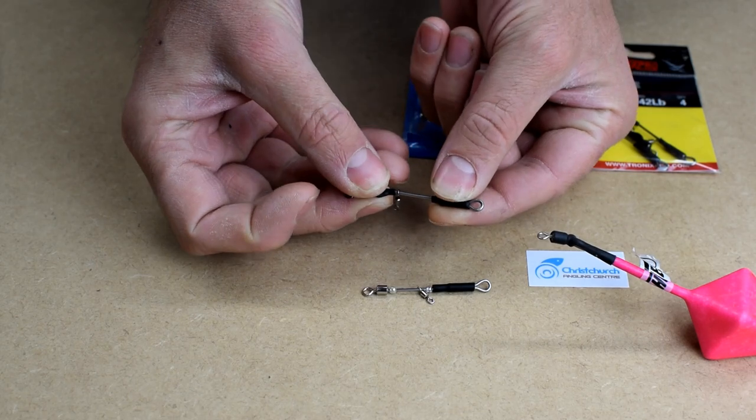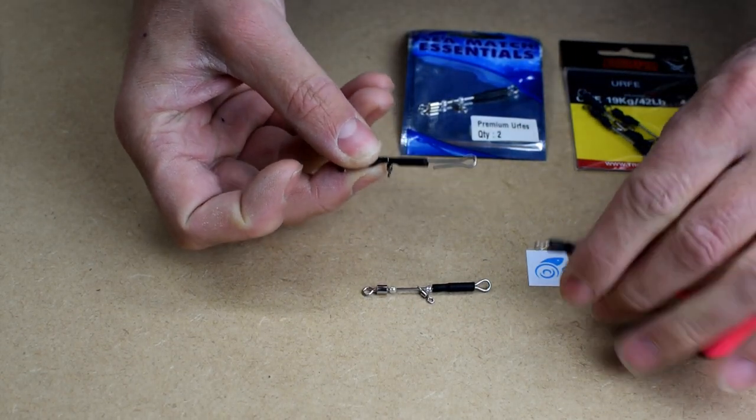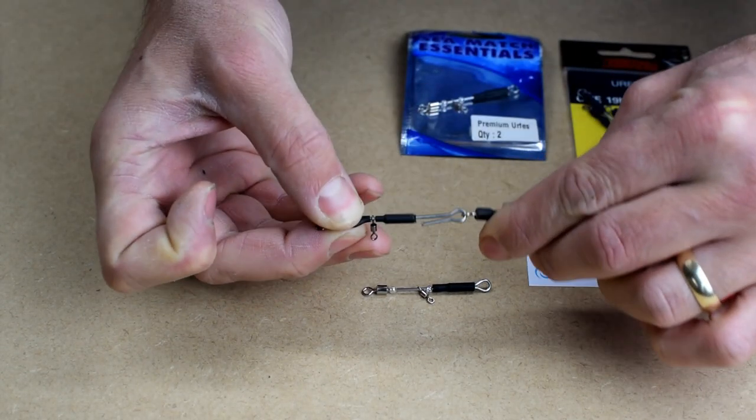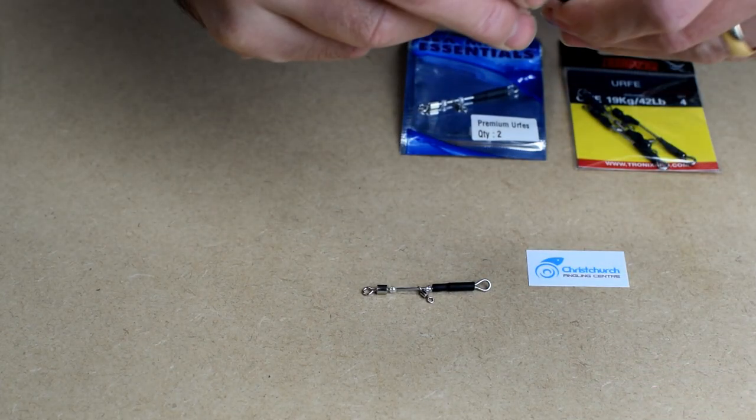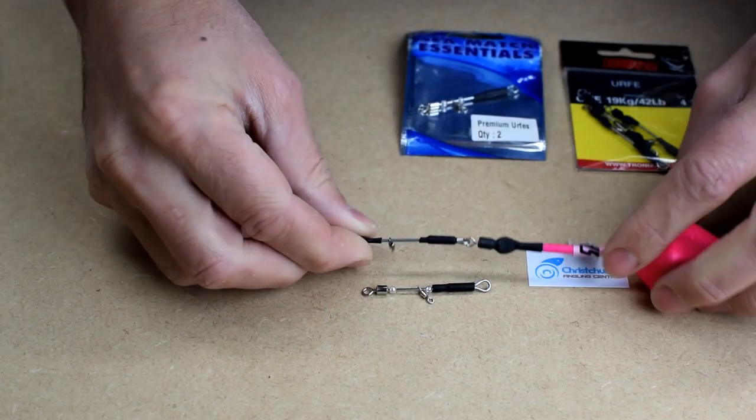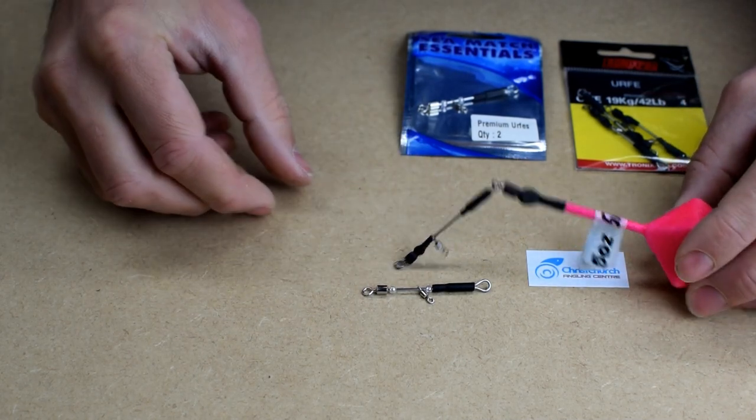The lead clip is quite simple. It's just a sleeve. Slide the sleeve back, clip on your lead, slide the sleeve back over, and that's that part done.